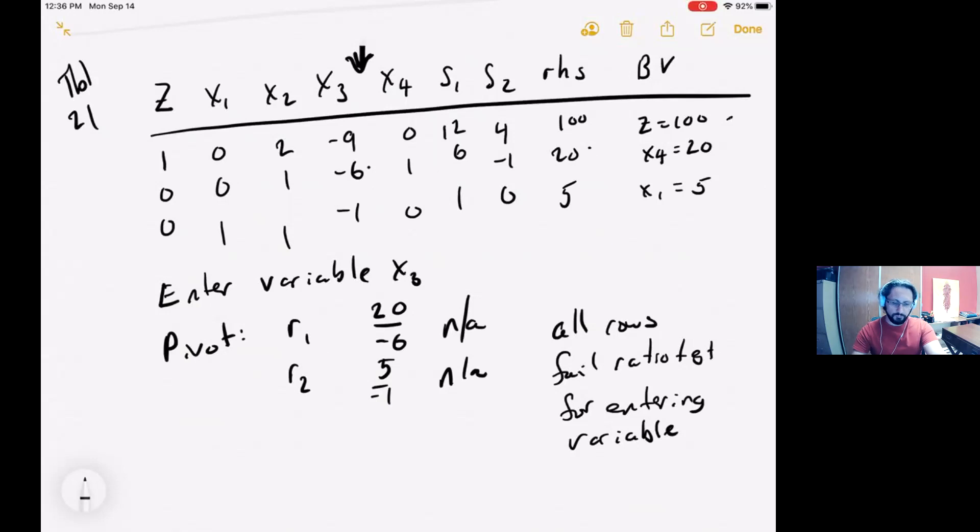When all rows fail the ratio test for the entering variable, that's the sign that the LP is unbounded. So now we know how to identify an unbounded LP, this property.